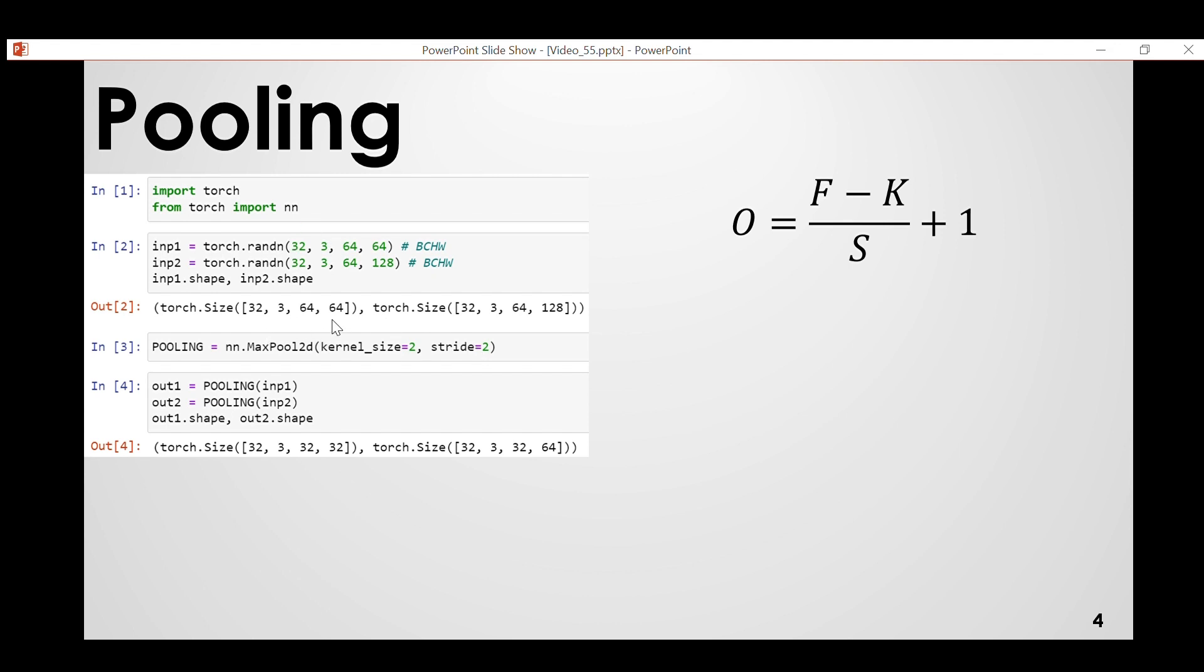So when we pass these two inputs through our pooling layer this is how we get the output. So let's now use the formula. F is 64 again for first input. Kernel size is 2 and stride is 2. If we calculate we get 32. Here height and width are same. But for input 2, height and width are different. So this is same as this one, but in this case 64 is replaced by 128 and we get 64. So this is 32, 64 and this is 32, 32.